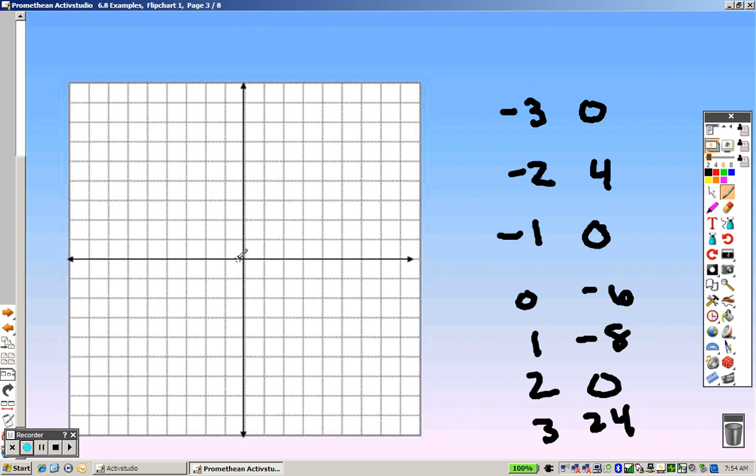So, let's graph some of these points. This is negative three, zero, right there. Negative two, one, two, three, four, it's right there. Negative one, zero, it's right there. Zero, one, two, three, four, five, six, it's down here. One, negative eight, it's down here. Two, zero, it's right there. And a positive three, twenty-four would be somewhere way out there.